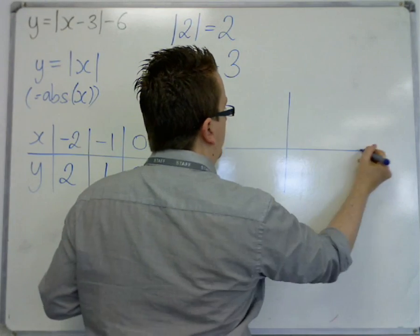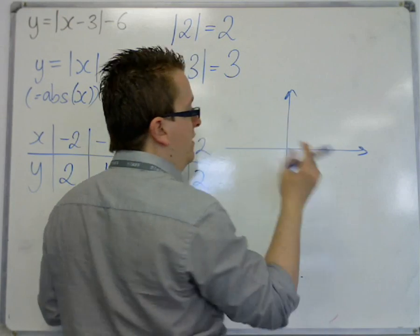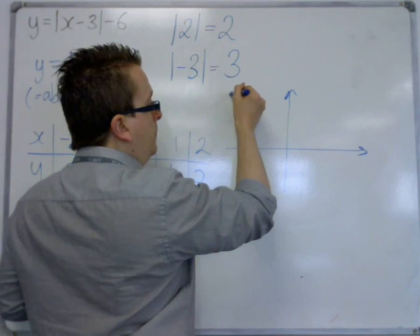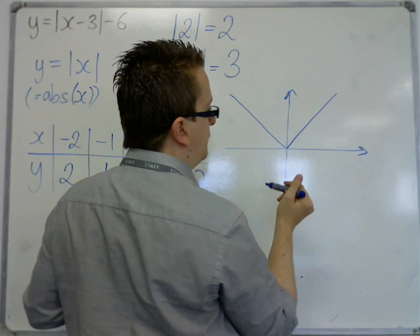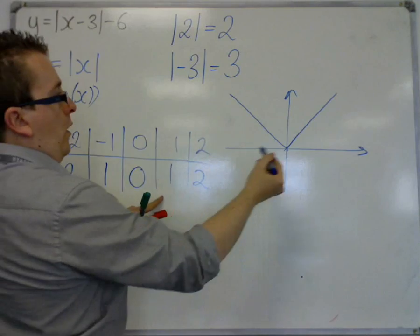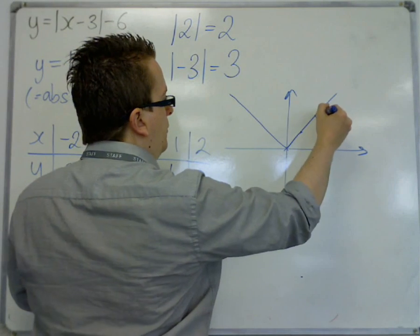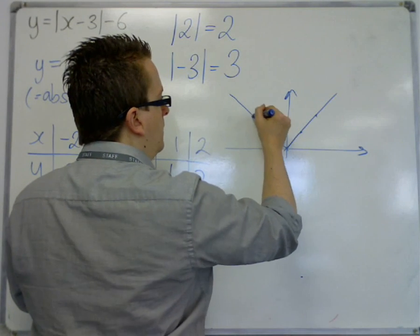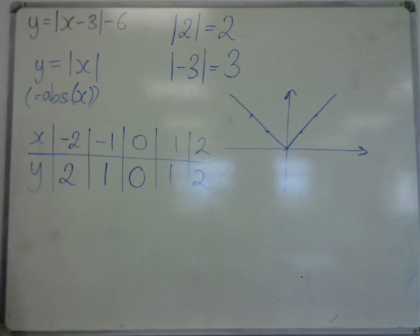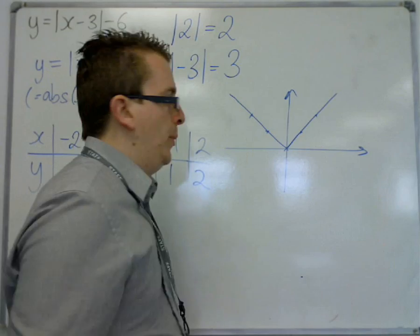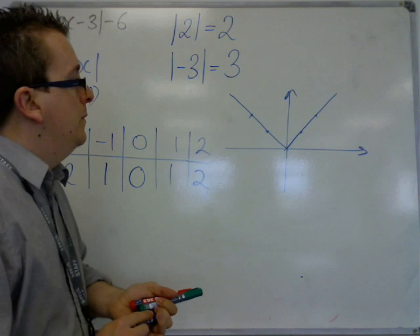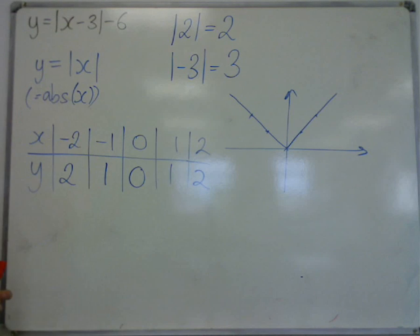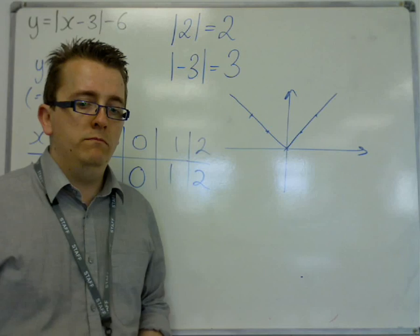So if you then plotted this curve, effectively, so there's no curvy bits, but it would look like this. There's 0,0, there's 1,1, 2,2, minus 1,1, minus 2,2. So it's this strange-looking V shape. You'll notice how it doesn't go below the x-axis in this case. So this is the most basic of modulus function.